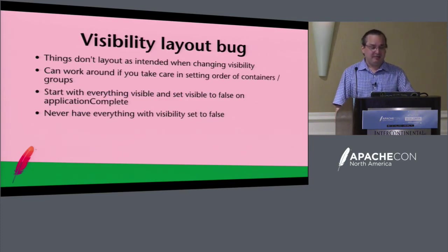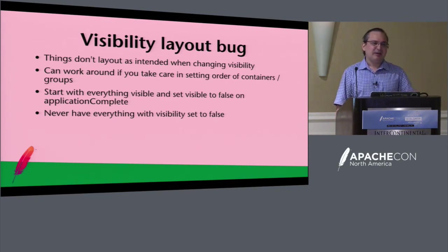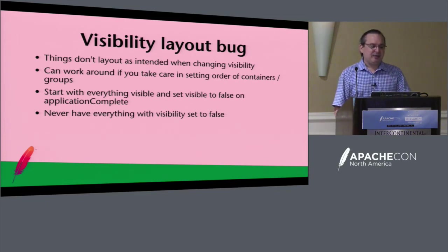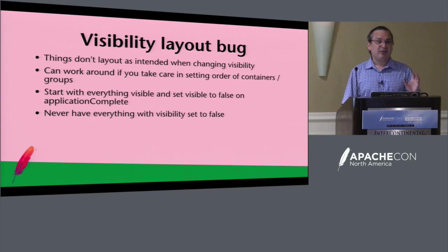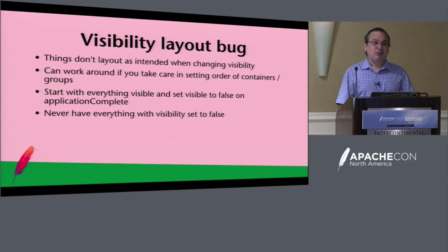There's a bug with visibility. If something is initially invisible, you get all sorts of layout issues — it doesn't take up any space, and when you make it visible, nothing is laid out correctly. You've got to be really careful about the order in which you set things visible and invisible. The easiest workaround was to set everything to visible when the application starts up, wait for it to measure everything, and then hide things as quickly as you can.